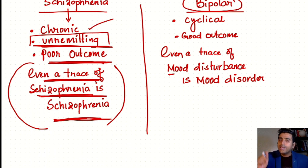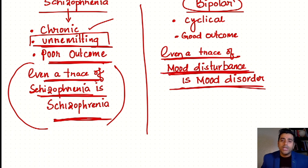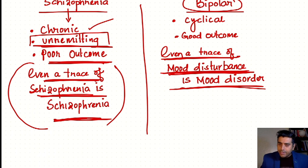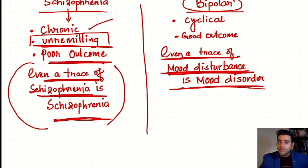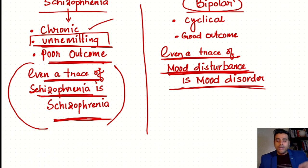Even a trace amount of Schizophrenia is Schizophrenia, and similarly, even a trace amount of mood disturbance is equal to mood disorder in the case of Bipolar. In clinical practice, it becomes very difficult to determine whether symptoms are episodic, remitting, or persisting. Sometimes very minimal symptoms persist in Schizophrenia that the attendant misses. Even a trace amount of mood disturbance in a Bipolar patient is mood disorder.